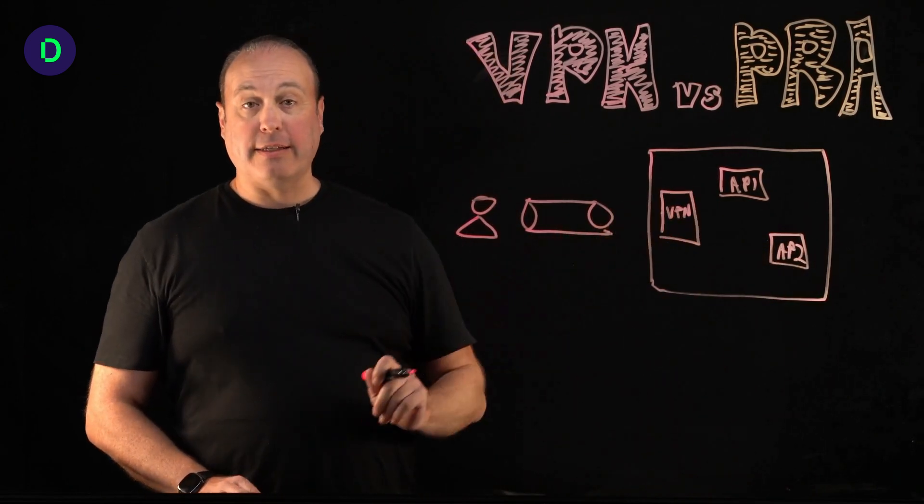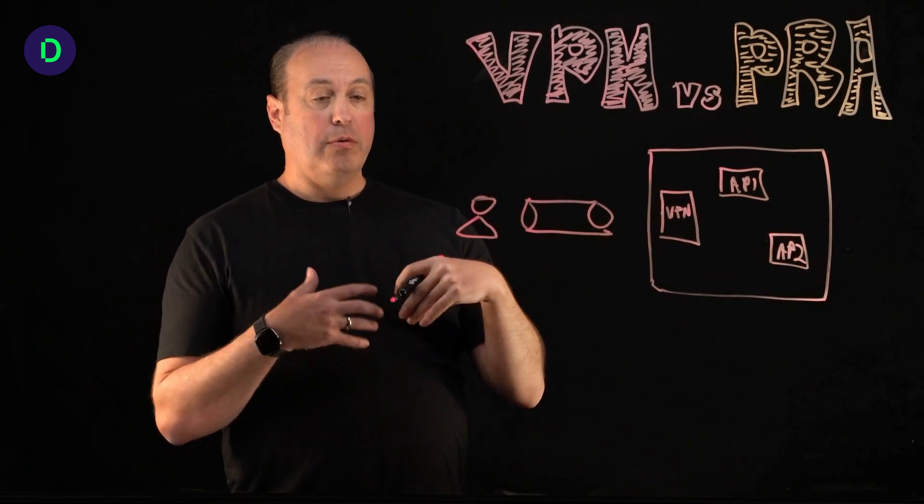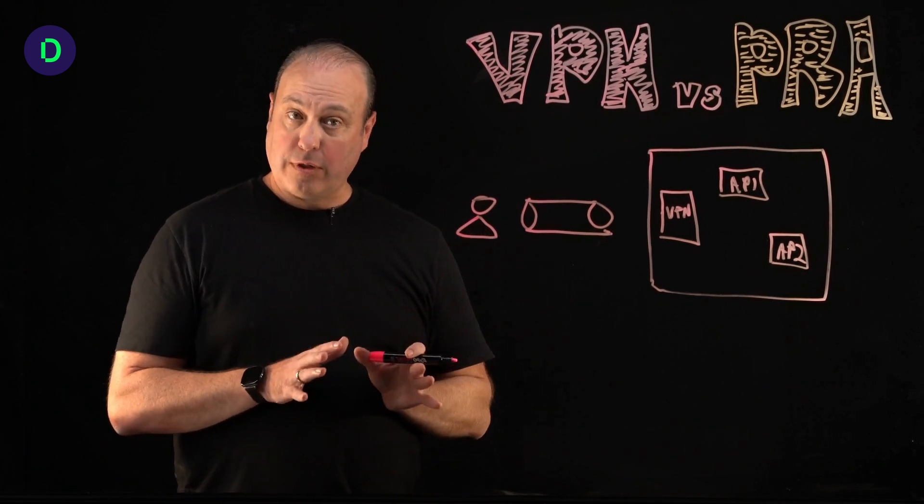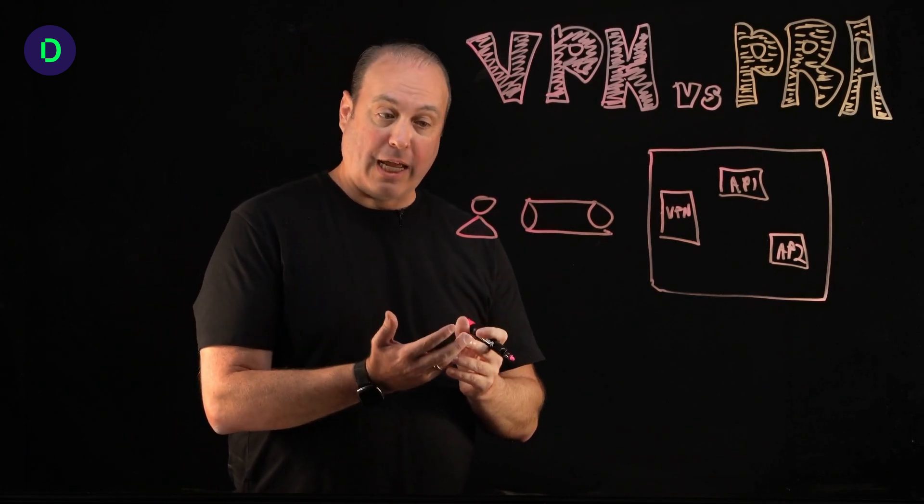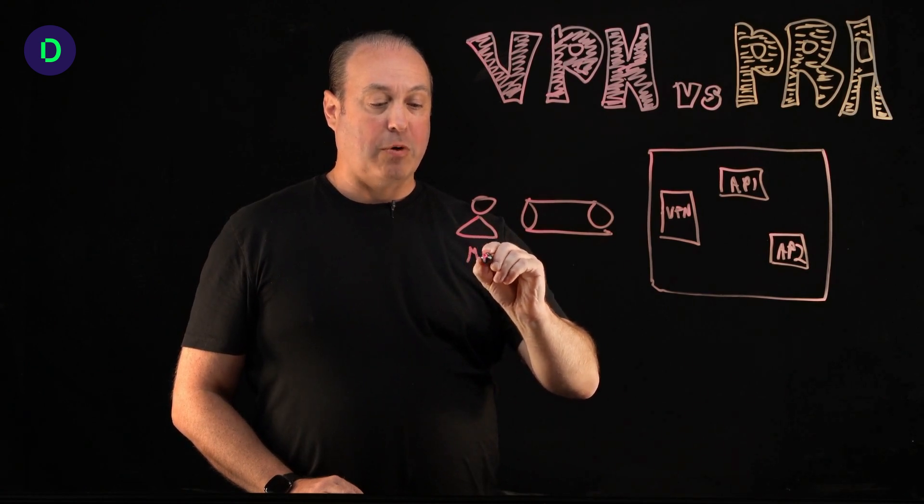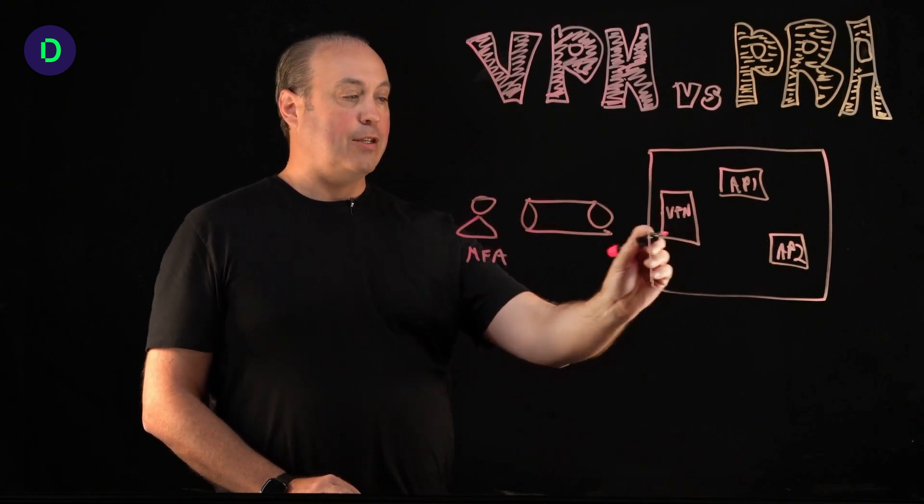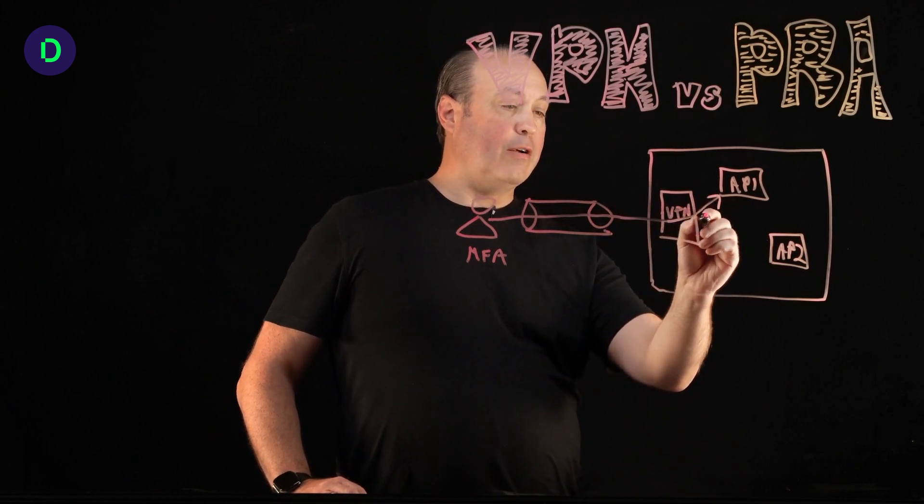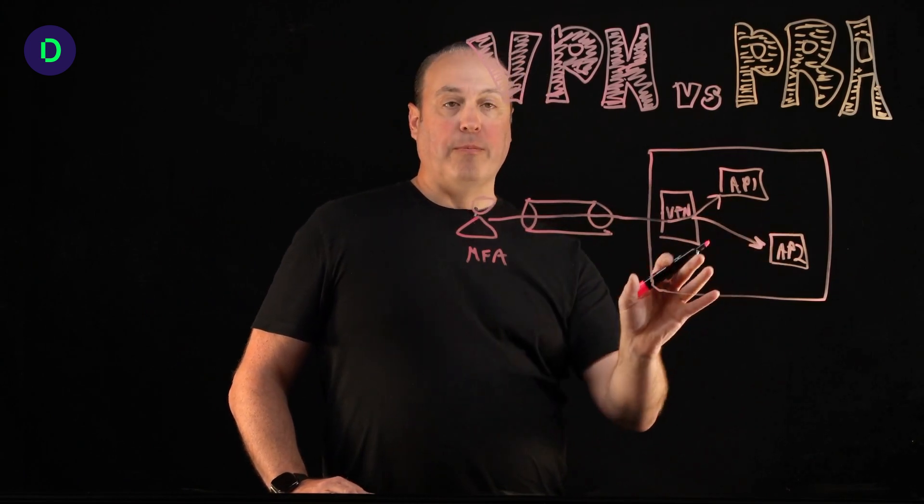And the way this employee would get access is usually through credentials, username and password at first, and then multi-factor authentication. So you hope MFA is how this person is getting access to this. And then they tunnel through, and then they get what they need here. They get here, they're in the network.